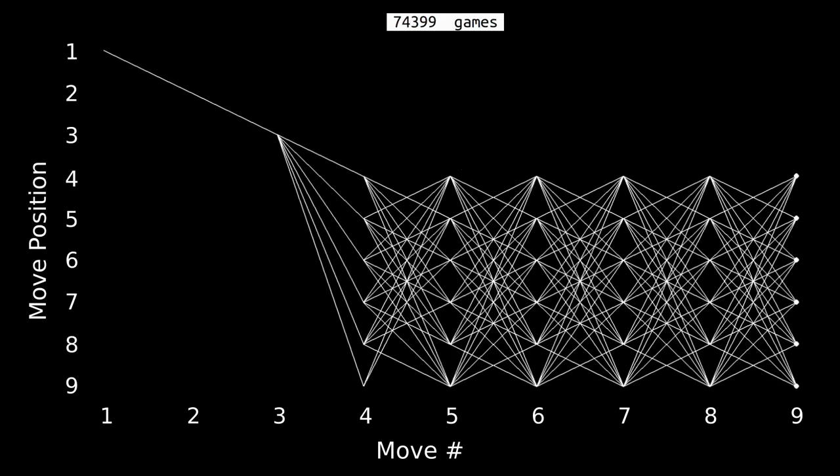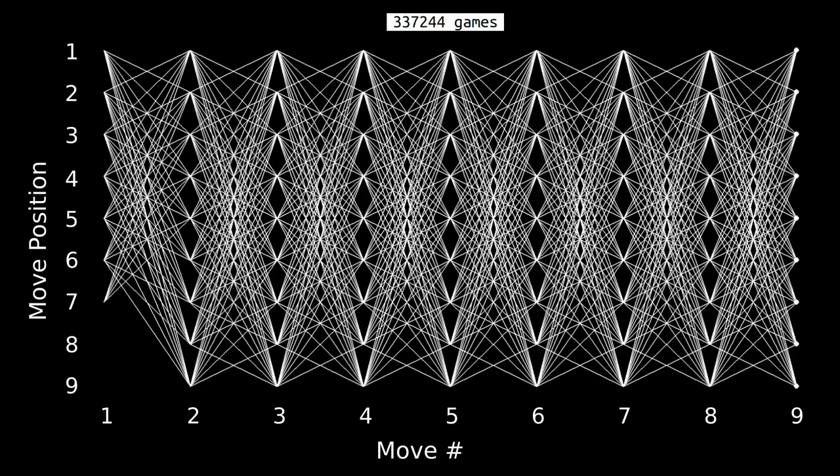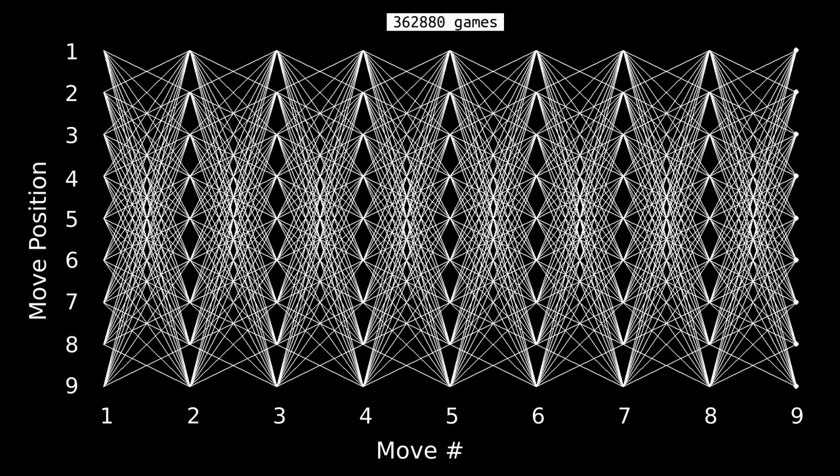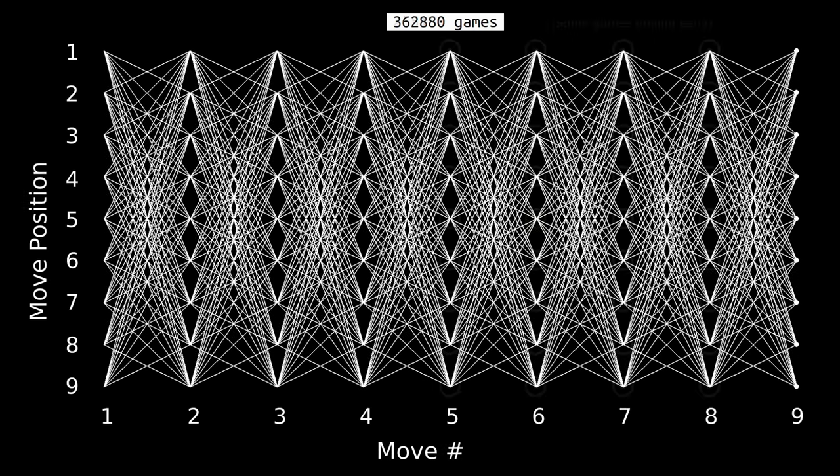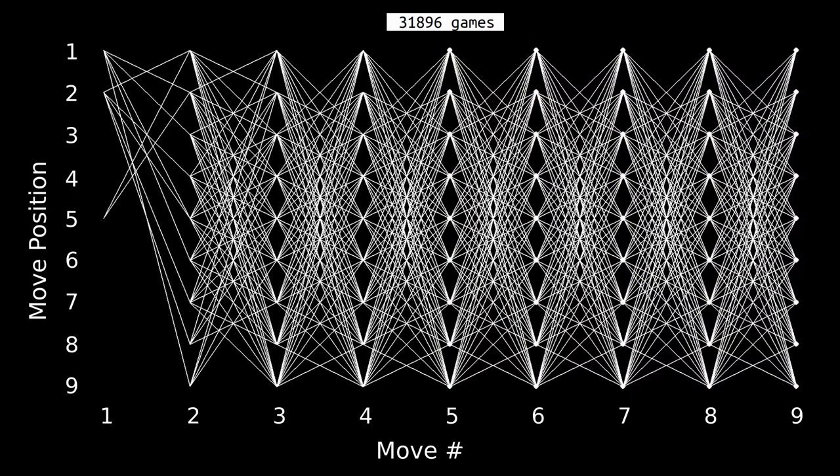So to recap real quick, the way that I got it down to 14 games of tic-tac-toe in the last video was by starting with the 362,880 possible orders in which to play the squares, then pairing that down to 255,168 by cutting off games someone has won. We then filter it down to 31,896 based on the fact that many of these games are symmetrical copies of one another.